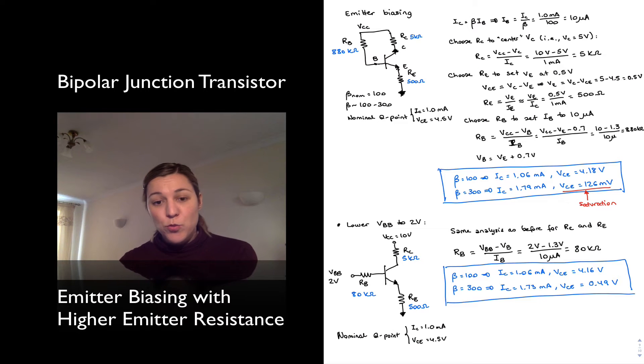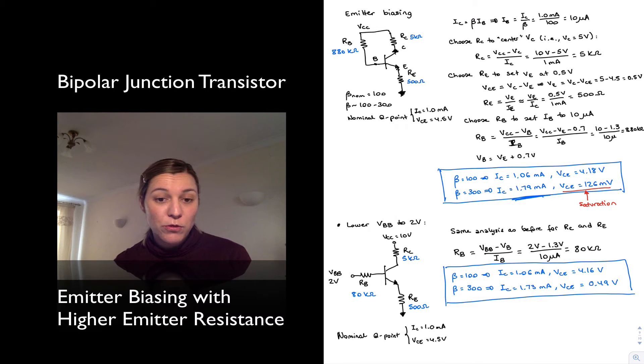Hello, so we just looked at the emitter biasing configuration and first we looked at a standard emitter biasing configuration where we had the base tied to VCC through a base resistor and we saw that right here. I should point that out here, it yields a fairly unstable Q-point from the point of view of beta variations.